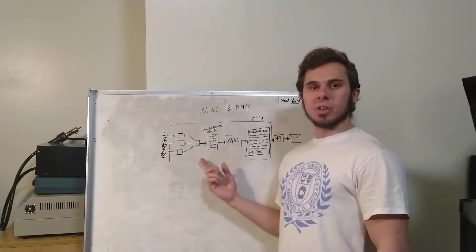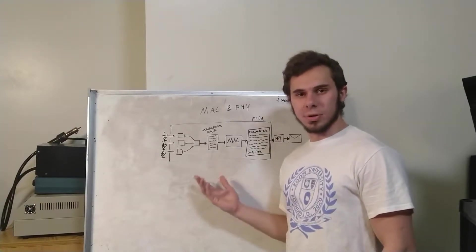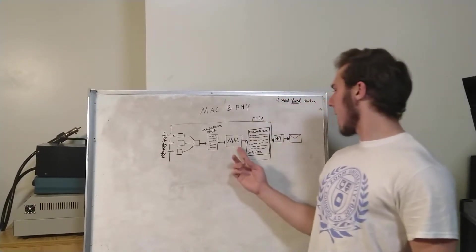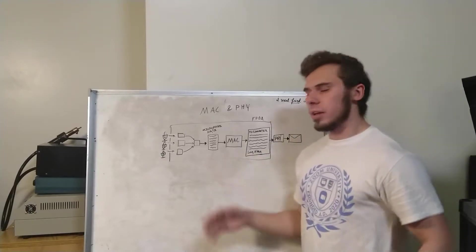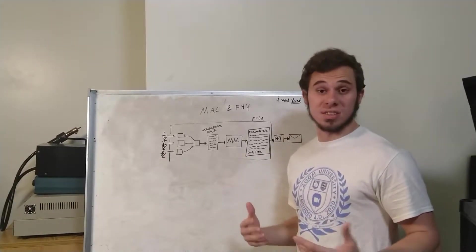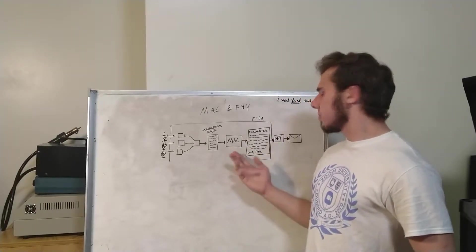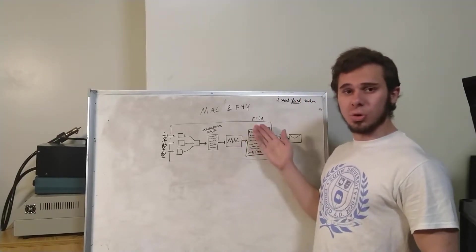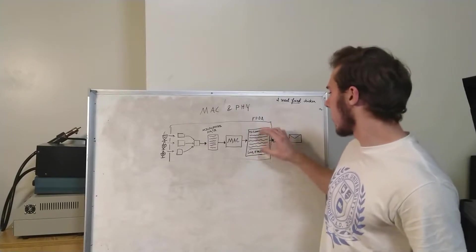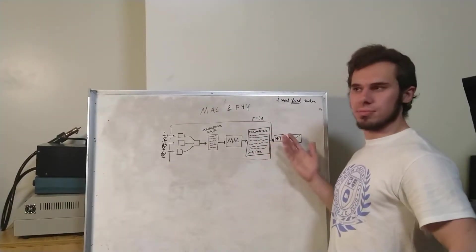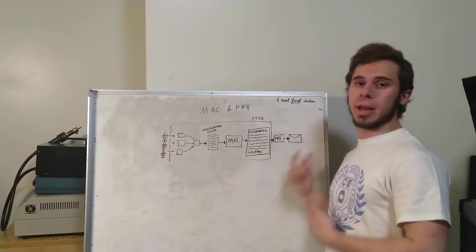So once we've got our microphone data, we need to actually send it to the computer. We do this using two things: a MAC and a PHY, in a process that is somewhat analogous to sending a letter. The MAC basically adds the address, the to and the from to our data, and then the PHY essentially puts it in an envelope and actually sends it.